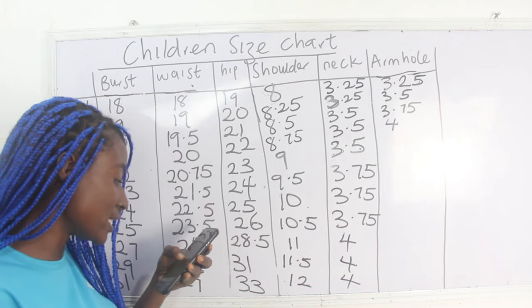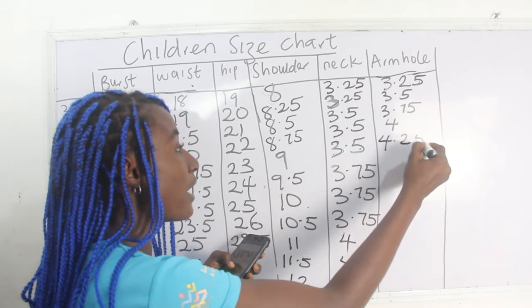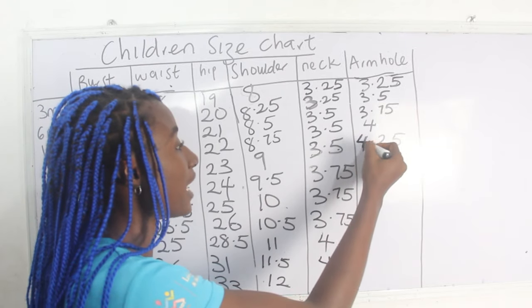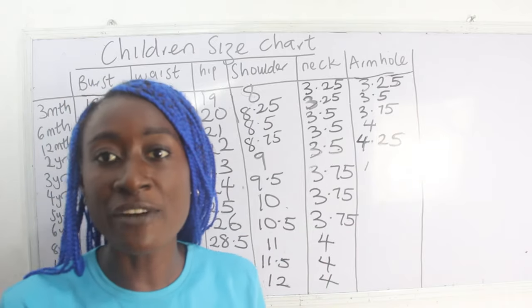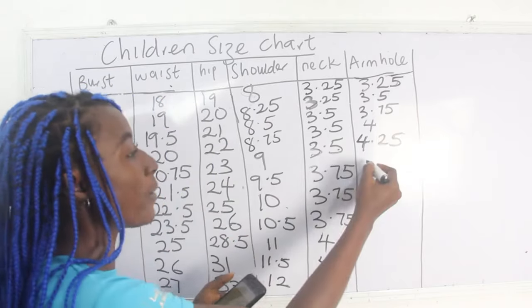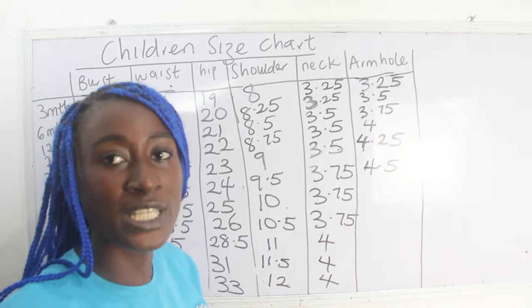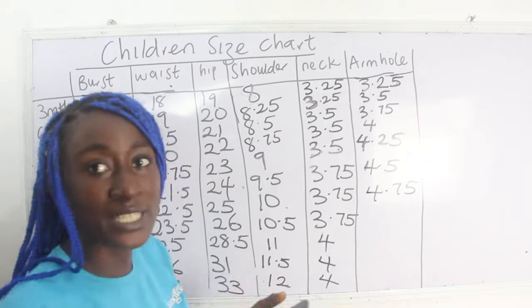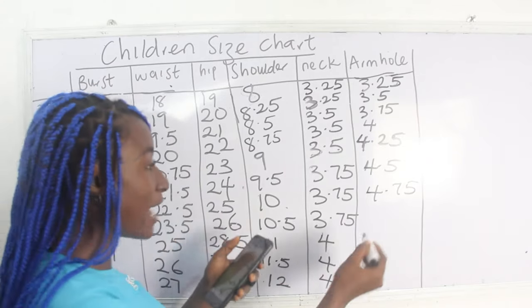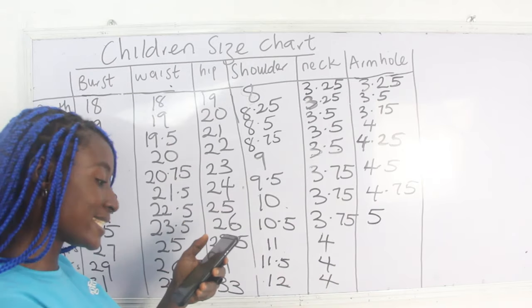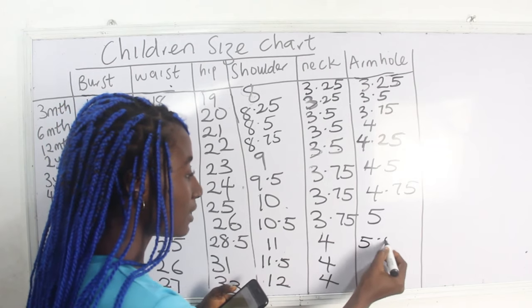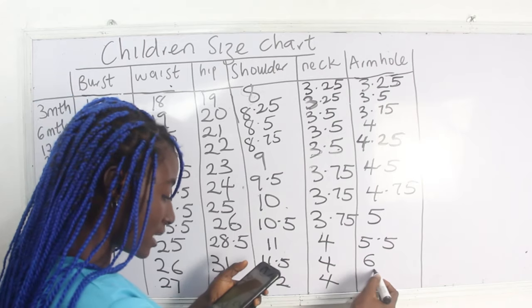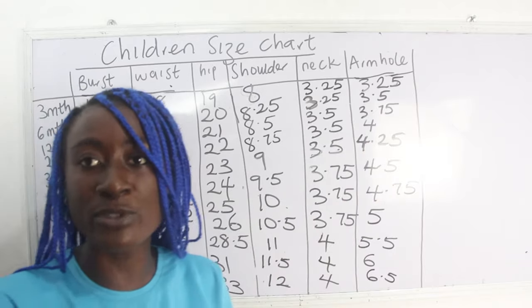For three years: armhole depth is 4.25 inches. For four years: 4.75 inches. For five years: 4.75 inches. For six years: 5 inches. For eight years: 5.5 inches. For 10 years: 6 inches. For 12 years: 6.5 inches. These are the armhole depths required to achieve your children's size charts.